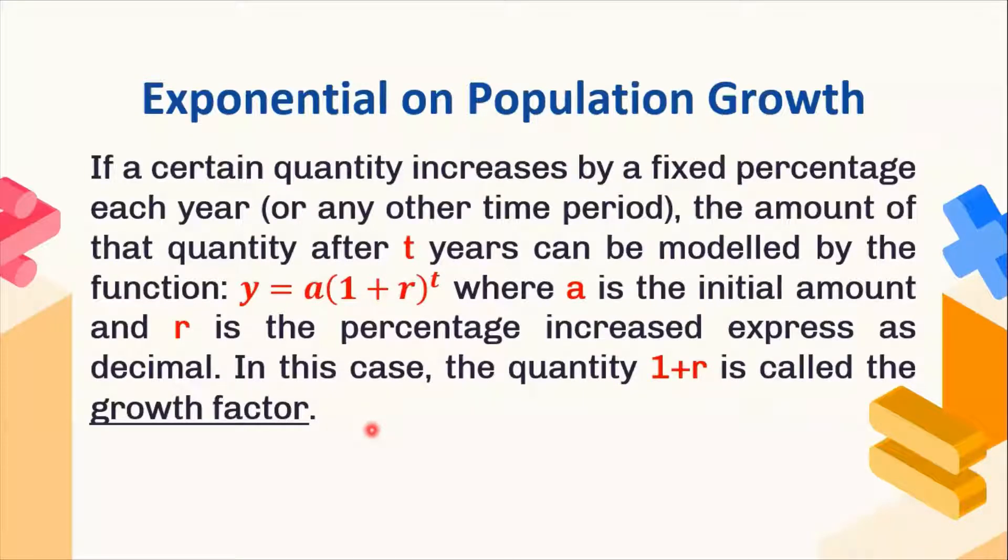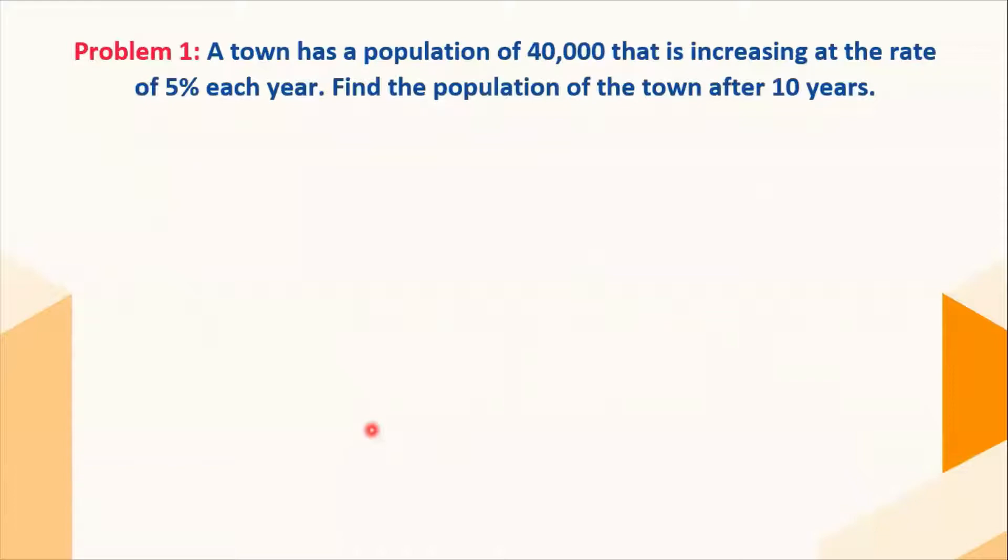Let's solve this first problem, which is an example of an exponential unpopulation growth. We have here a town has a population of 40,000 that is increasing at the rate of 5% each year. Let's find the population of the town after 10 years. First, let's identify the given facts.